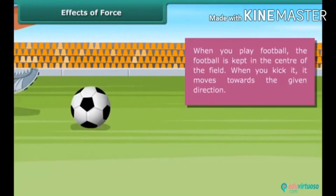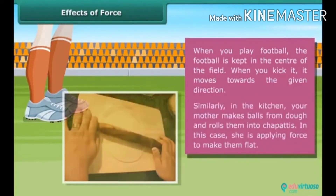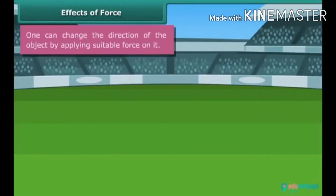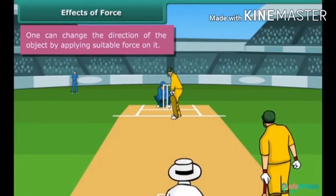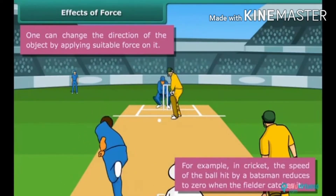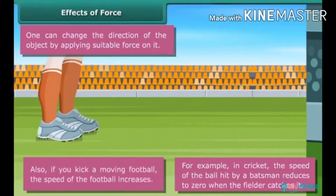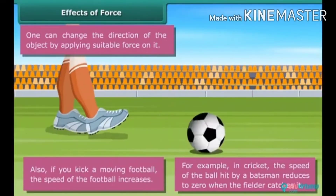When you play football, the ball is kept in the center of the field. When you kick it, it moves in the given direction. Similarly, in the kitchen, when your mother makes balls from dough and rolls them into chapatis, she is applying force to make them flat. In cricket, the speed of a ball hit by a batsman reduces to zero when a fielder catches it. If you kick a moving football, its speed increases.